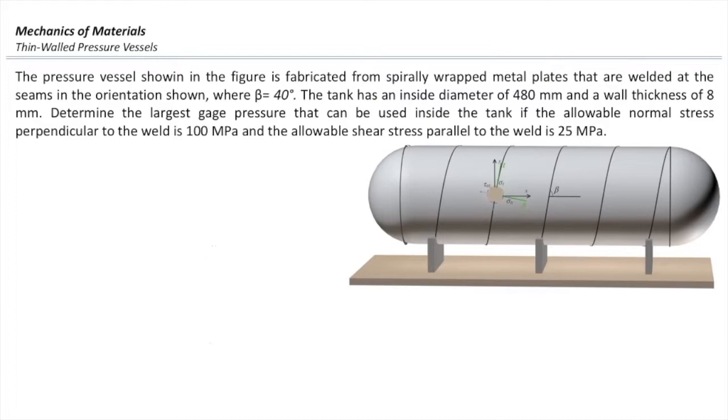The tank has an inside diameter of 480 mm and a wall thickness of 8 mm. Determine the largest gauge pressure that can be used inside the tank if the allowable normal stress perpendicular to the weld is 100 MPa and the allowable shear stress parallel to the weld is 25 MPa.